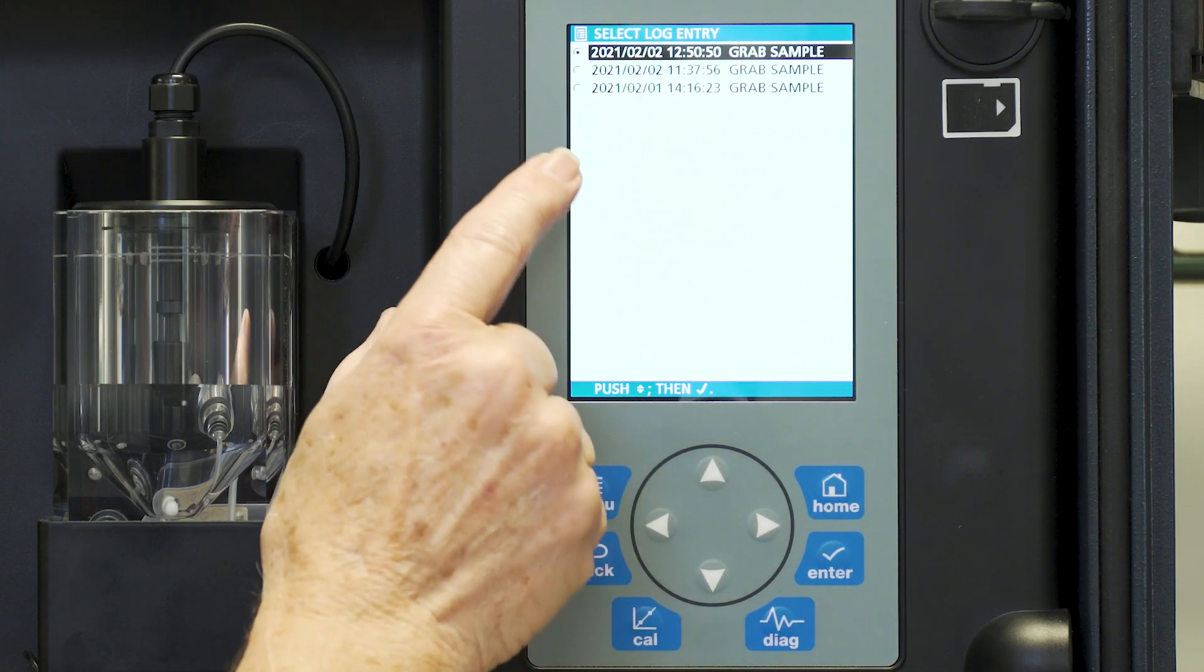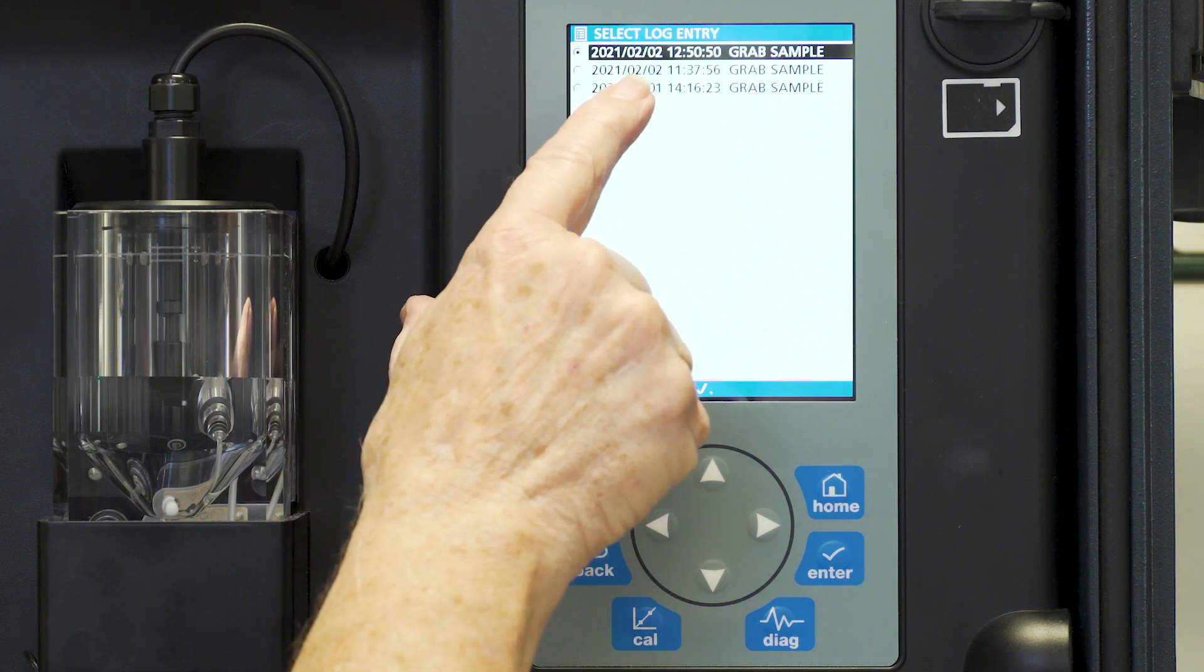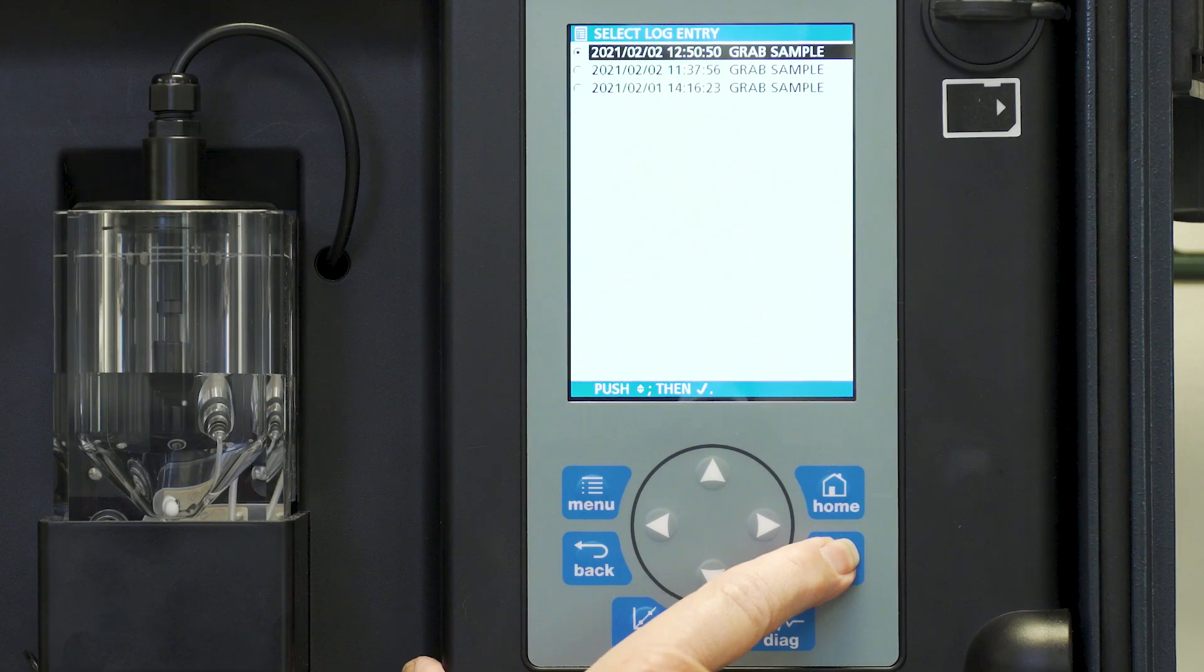And you'll see our late reading that we just had today on the February the 2nd. We press enter. And then it will show us the value of that reading.